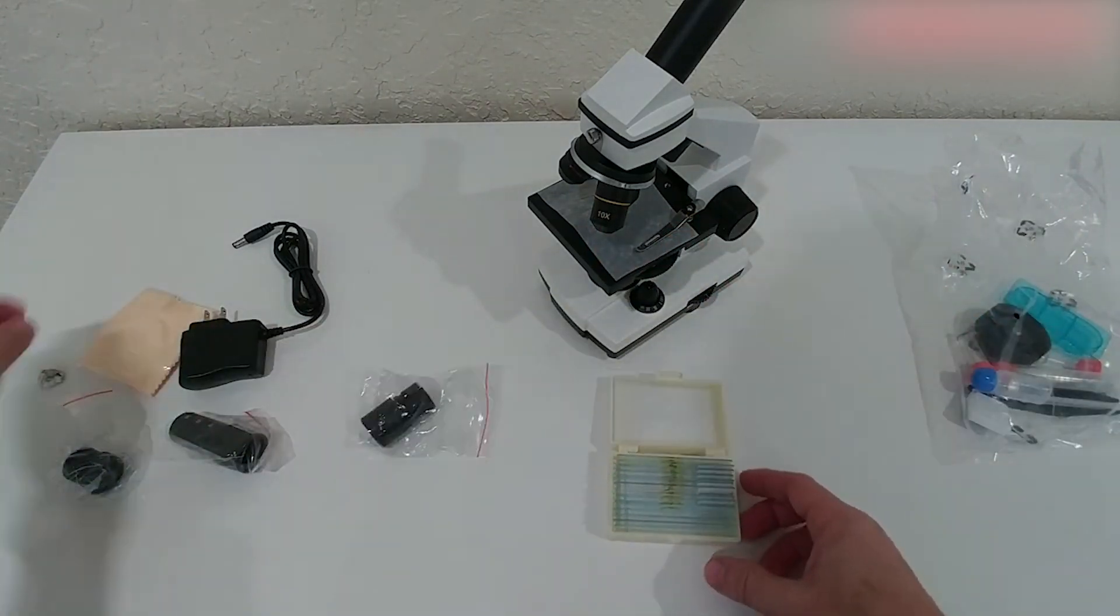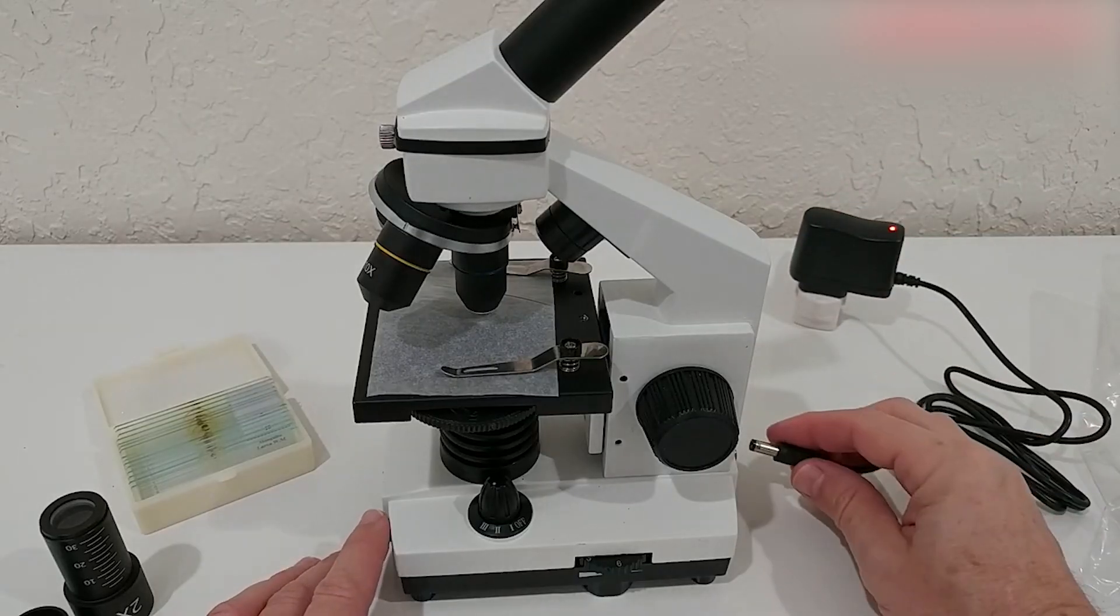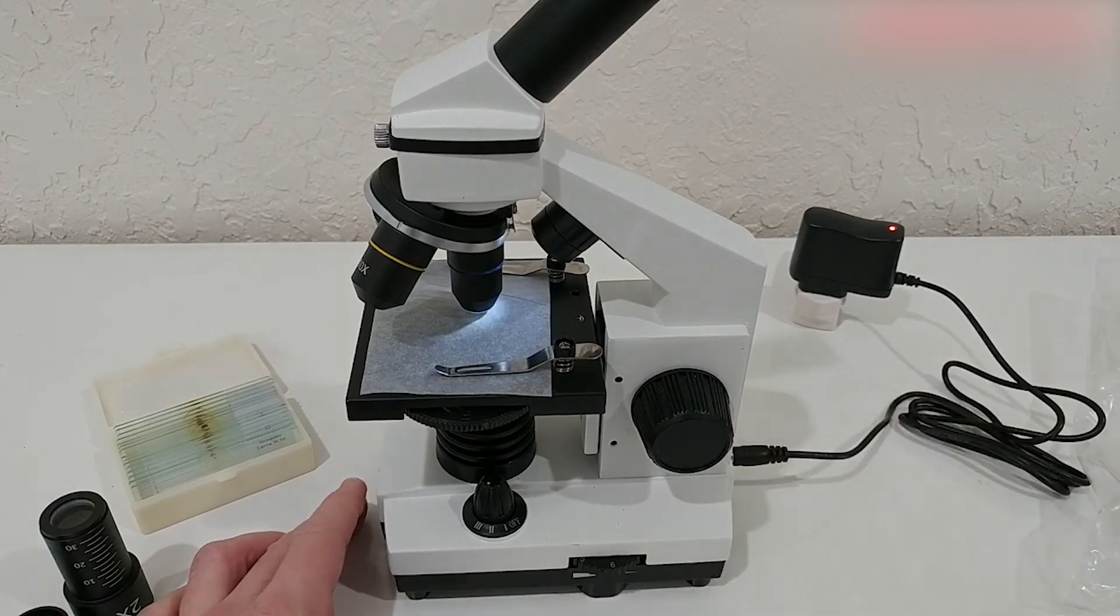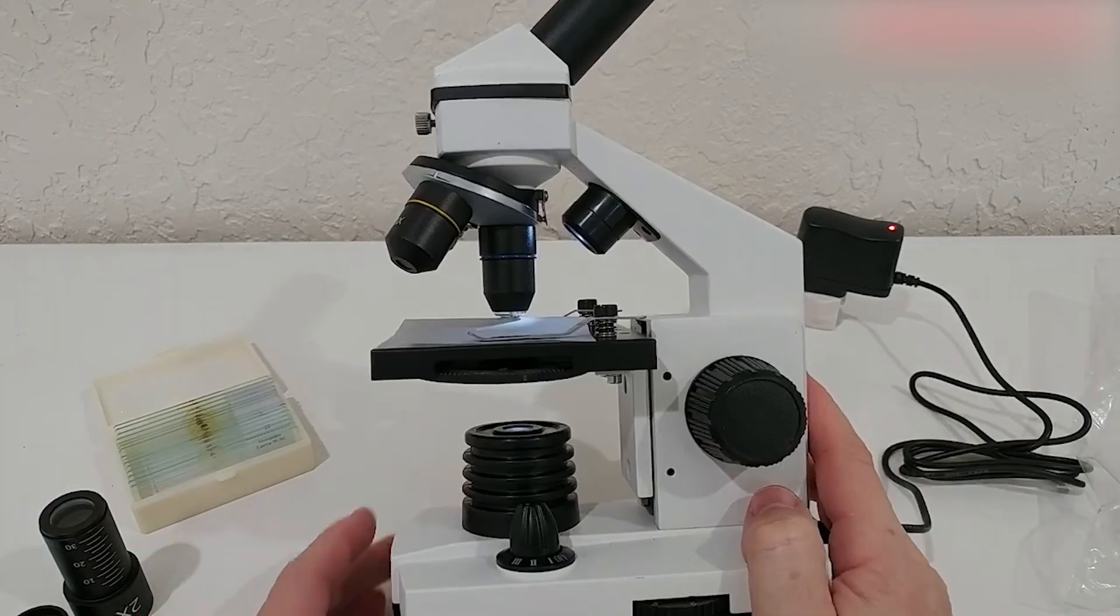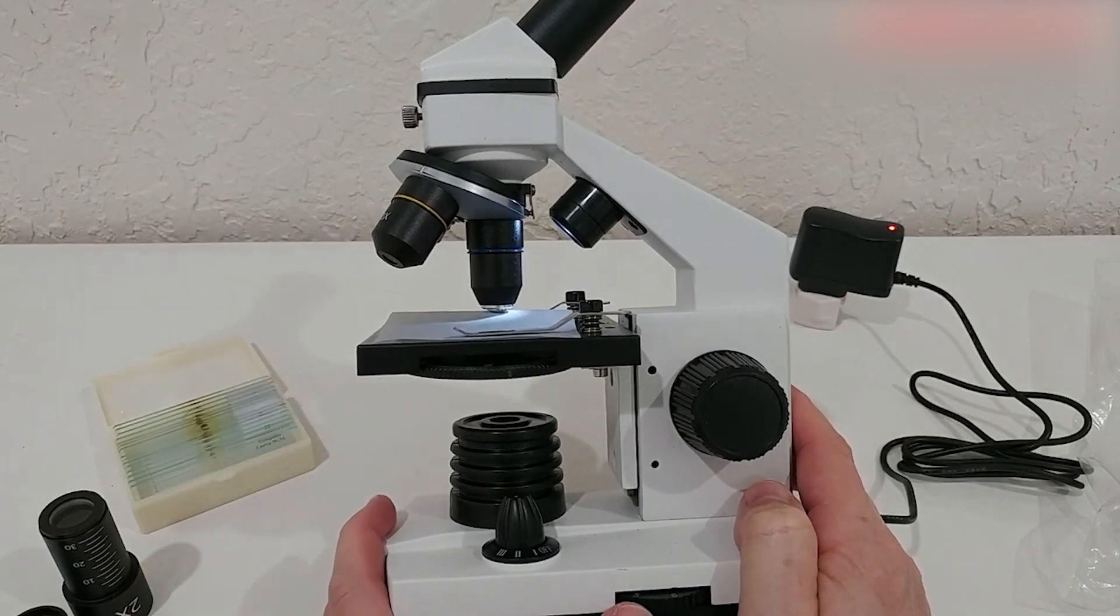But that's not all. The microscope's dual illumination system takes your viewing experience to the next level. With top and bottom LED lights working in harmony in bright field mode, you can illuminate your specimens from both sides for optimal visibility.